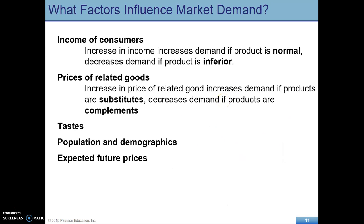What would cause the demand curve to shift? Income — a change in the income of consumers. If consumers' income goes up and the good is a normal good, demand for that good is going to increase. Demand will decrease if that product is inferior. We can also think about substitutes and complements — these would shift our demand curve. We also have things like tastes, population and demographics, and expected future prices. You want to be really familiar with all of these shifters of the demand curve.